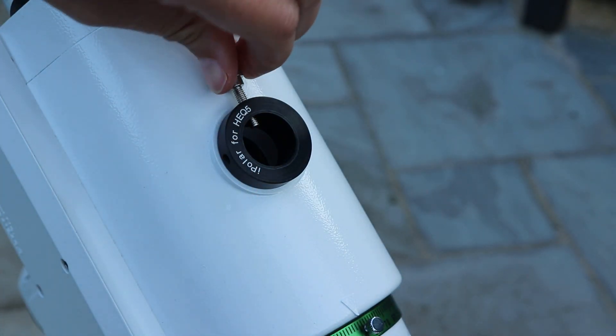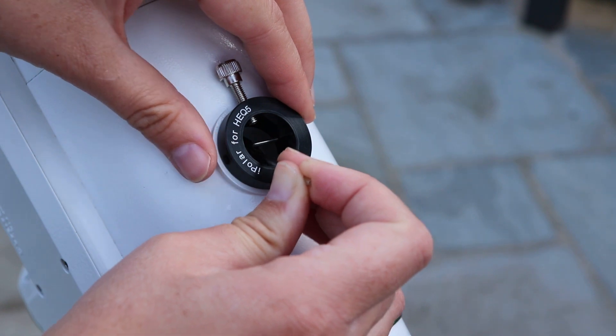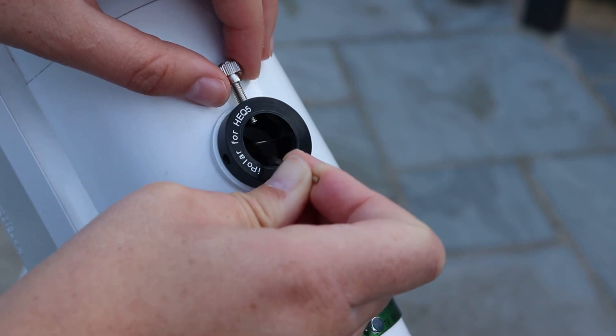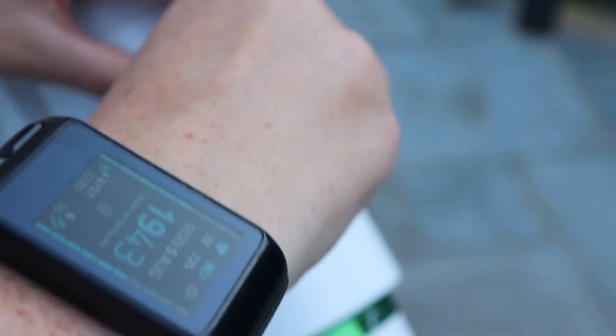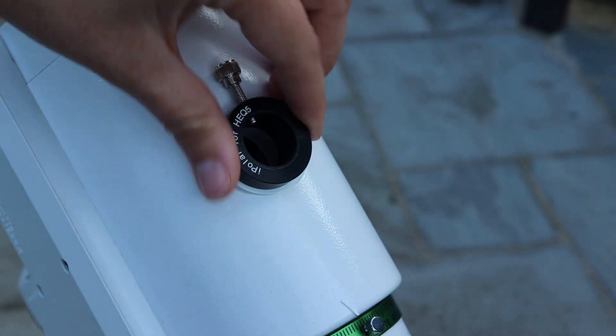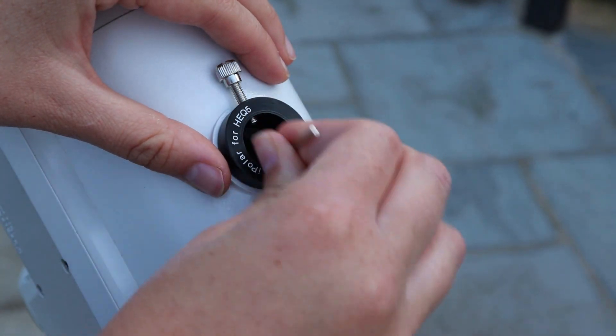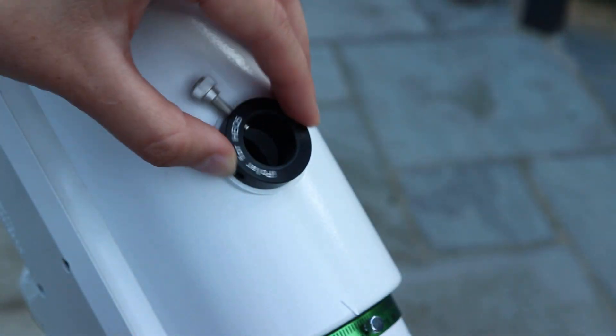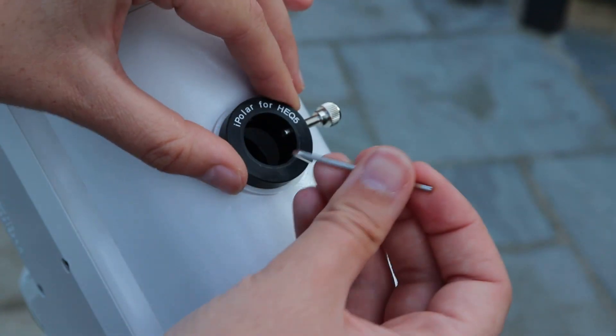Then I'm just going to loosen off this screw. Actually what I suggest you do is not have the thumbscrew at 12 o'clock as I've just found out. Let me just loosen the other one as well. Either just rotate it to one side or the other so it's completely free.